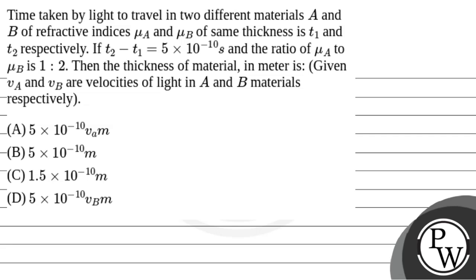Hello, let's work out this question. Light travels through two different materials A and B with refractive indices mu A and mu B of same thickness T1 and T2 respectively. If T2 minus T1 equals 5 times 10 to the power minus 10 seconds and the ratio of mu A to mu B is 1 to 2.